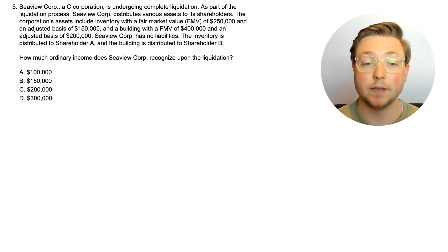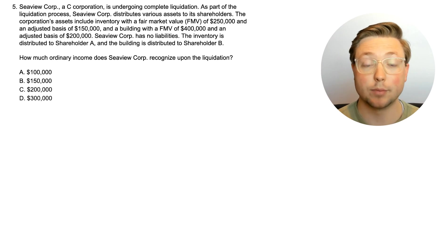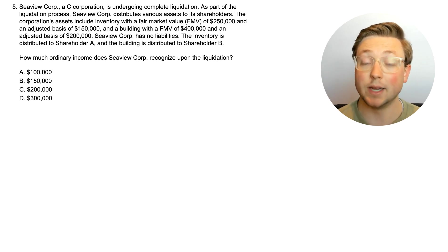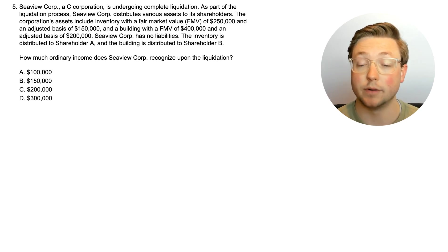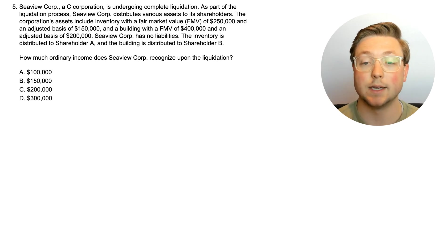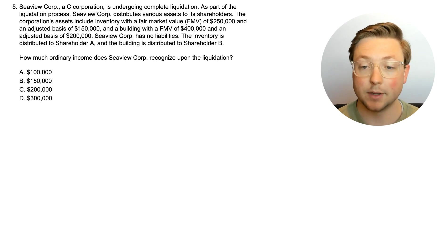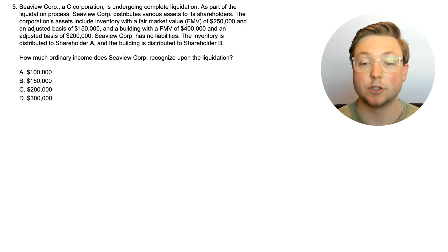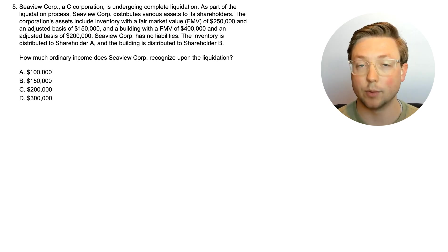Here is question five. C View Corp, a C corporation, is undergoing complete liquidation. As part of the liquidation process, C View Corp distributes various assets to its shareholders. The corporation's assets include inventory with a fair market value of $250,000 and an adjusted basis of $150,000, and a building with a fair market value of $400,000 and an adjusted basis of $200,000. C View Corp has no liabilities. The inventory is distributed to shareholder A, and the building is distributed to shareholder B. How much ordinary income does C View Corp recognize upon the liquidation?